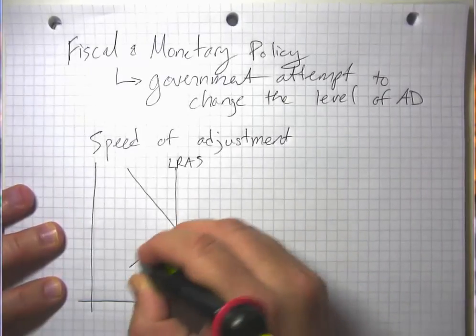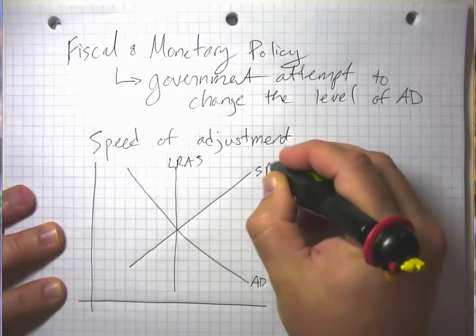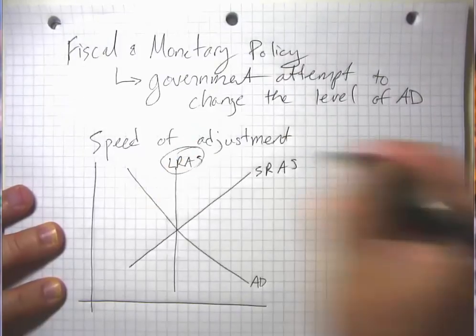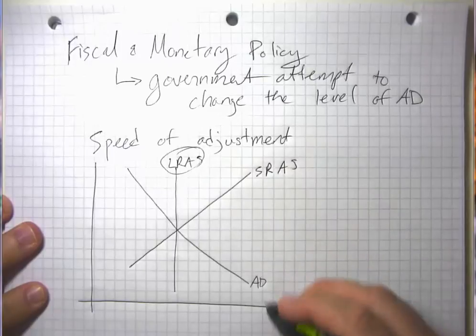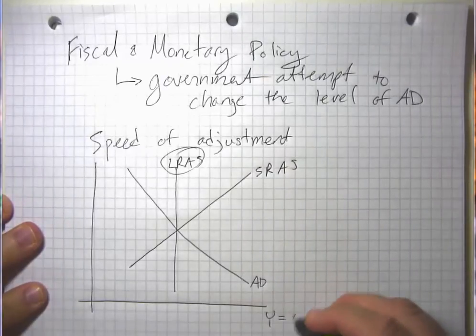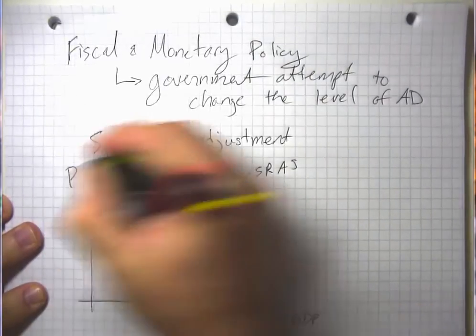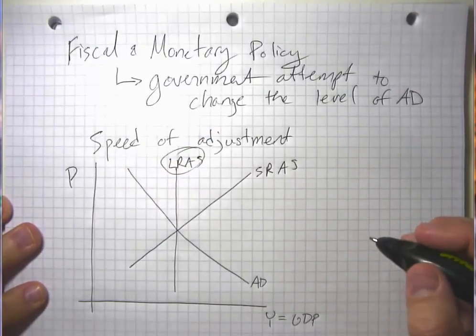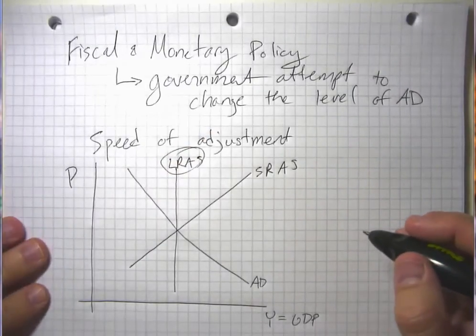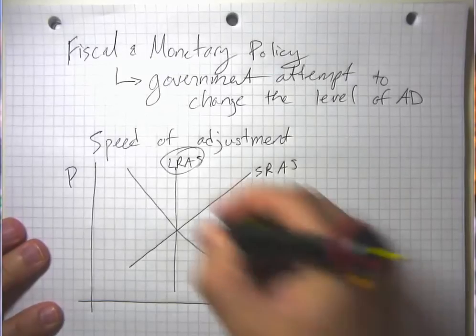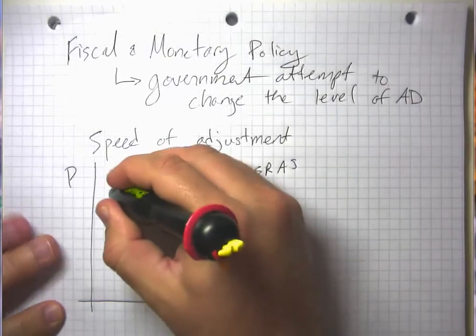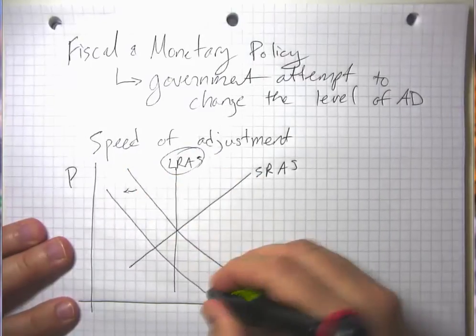Just to review here, we have our long run aggregate supply curve that represents the economy producing its natural rate of output or its natural rate of GDP. We have the aggregate price level, something like the GDP deflator on that axis. We think that recessions in this model are caused, say for instance, by a fall in aggregate demand.